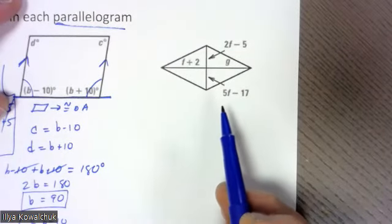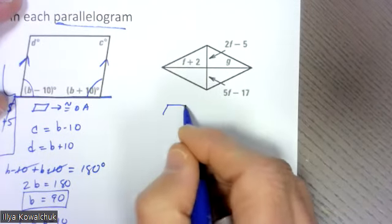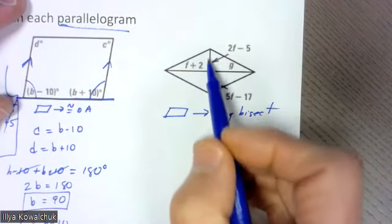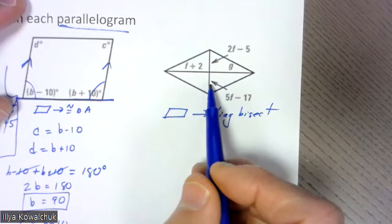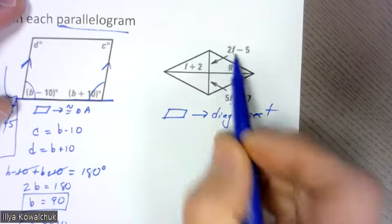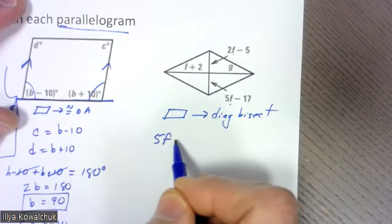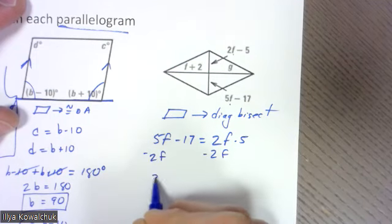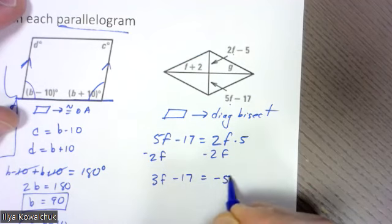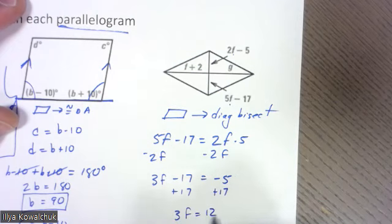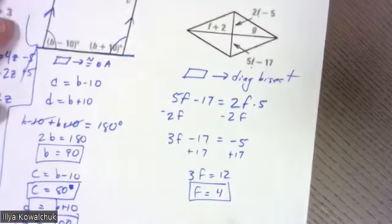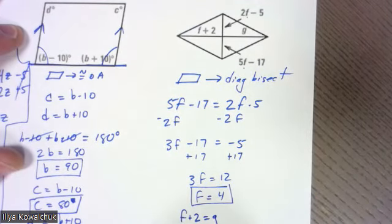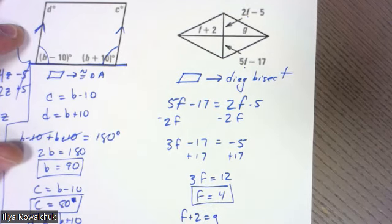Next, I have a parallelogram with a diagonal — this reminds me of the Diagonals Bisect Theorem. The two parts of each diagonal are congruent. For the segments with only f as the variable: 5f − 17 = 2f − 5, so 3f = 12, giving f = 4. Then going back, f + 2 = g, so g = 6.